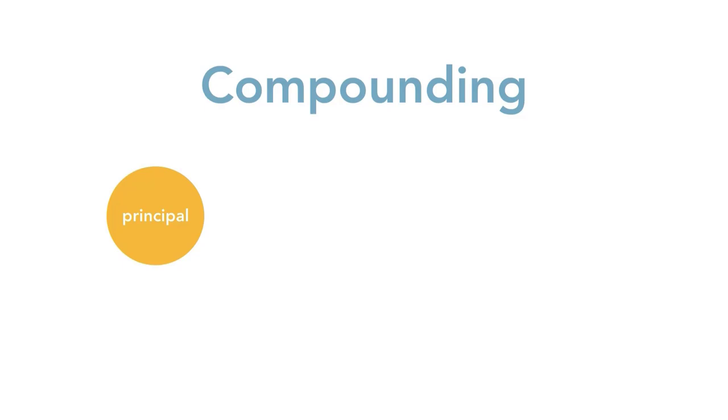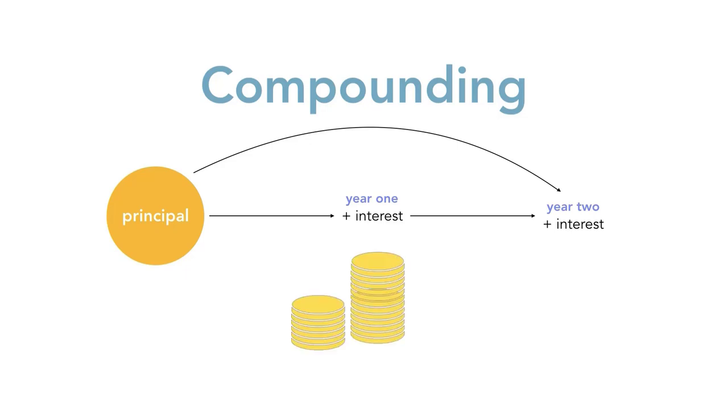Compounding refers to the act of earning interest on interest. For every year of interest you've earned, in the following year, you will not only earn interest on your principal investment, but also on the interest you earned the previous year. You might be thinking, how much can I really earn from the interest on that little interest? You'll be surprised.